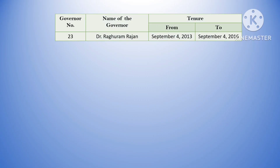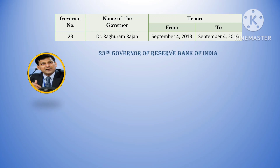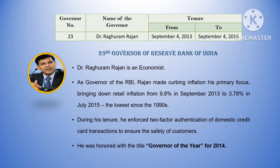The twenty-third governor was Dr. Raghuram Rajan. His tenure was from September 4, 2013 till September 4, 2016. As governor of RBI, Rajan made curbing inflation his primary focus, bringing down retail inflation from 9.8 percent in September 2013 to 3.78 percent in July 2015 — the lowest since the 1990s. During his tenure, he enforced two-factor authentication of domestic credit card transactions to ensure customer safety. He was honored with the title 'Governor of the Year' for 2014, the first governor to receive this title.